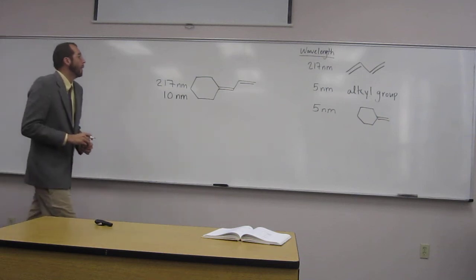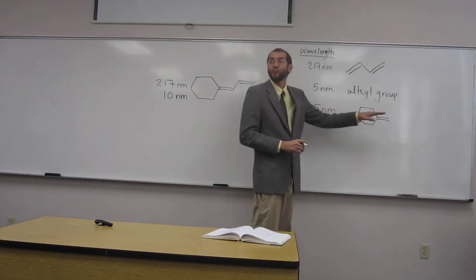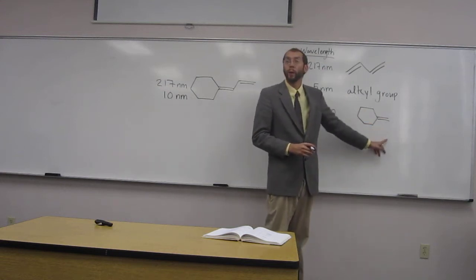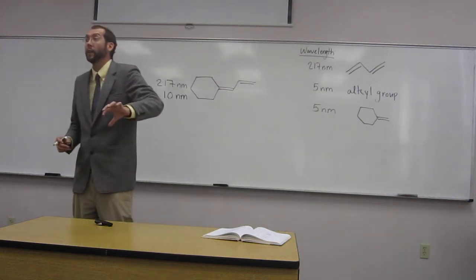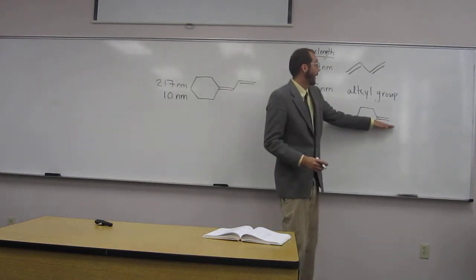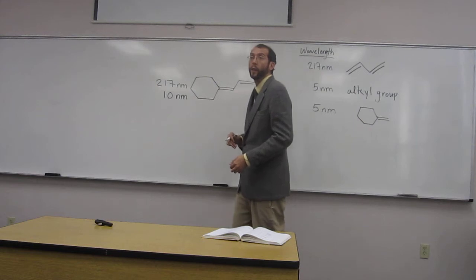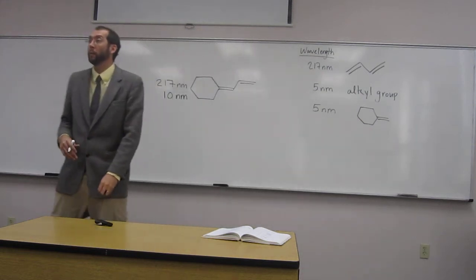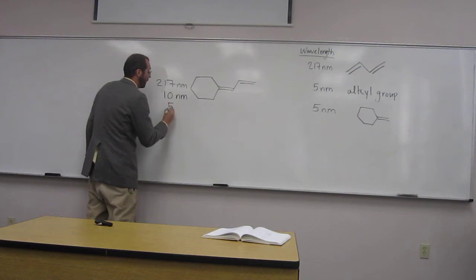Also, 5 nanometers should be added for every time you see an exocyclic double bond. Exocyclic means outside of the cyclic portion of the molecule. You see right outside, you've got this exocyclic double bond right there, so we're going to have 5 more nanometers. It's an additive effect.